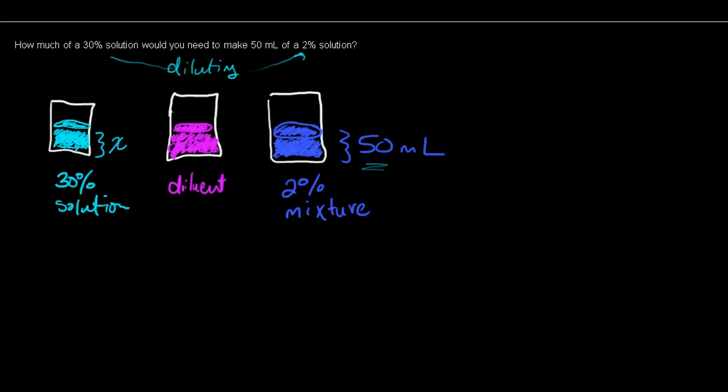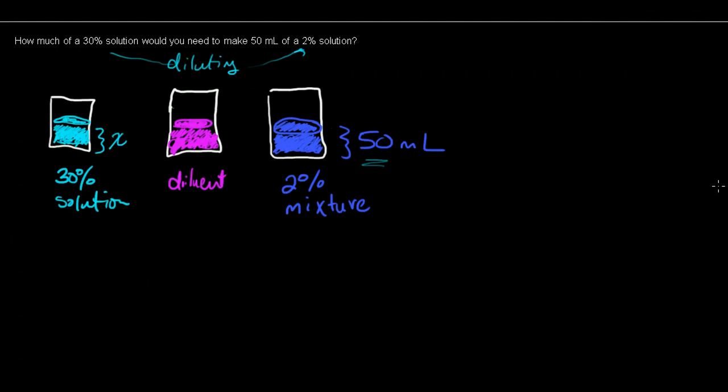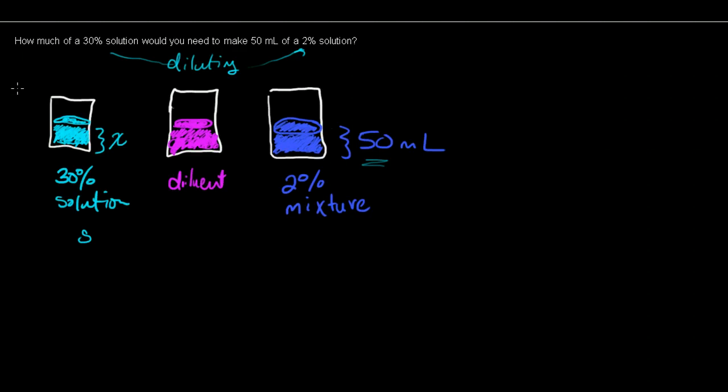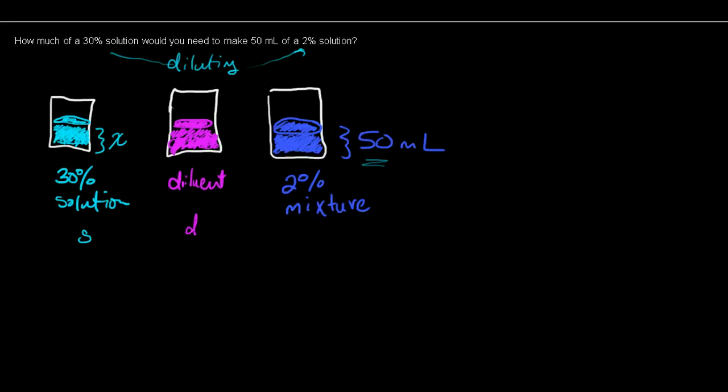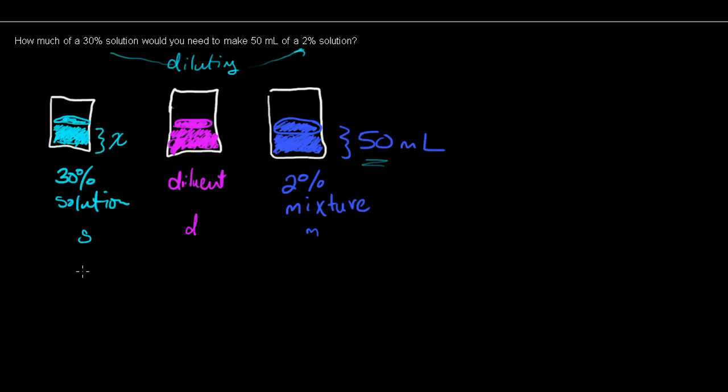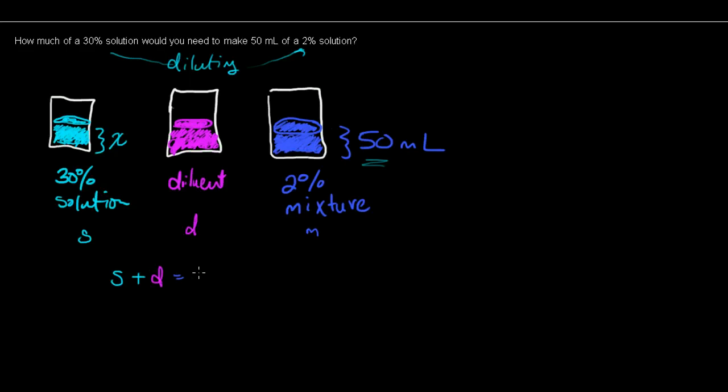So let's take a look firstly as a mathematician. What are two things that we know about it? Well we know that if we call our solution S and we called our diluent D and we called our mixture M, that we are going to make a solution that has some amount of the S plus some amount of our diluent, and that's going to give us 50 milliliters of the solution. That's M is equal to 50 here.